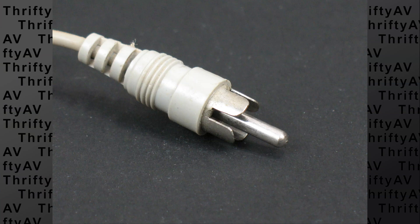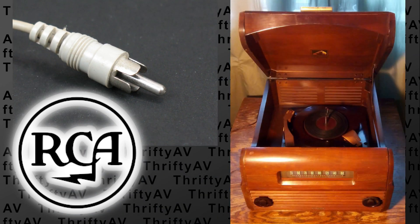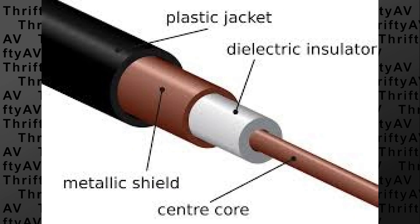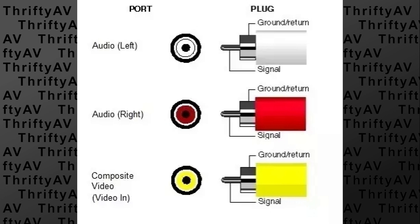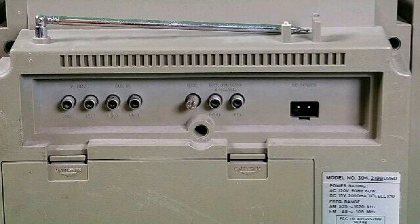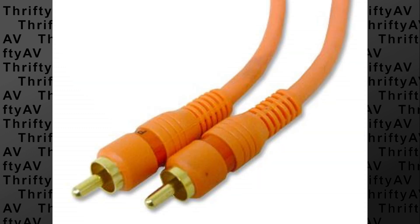RCA connectors were developed in the 1940s by the Radio Corporation of America — RCA — to hook up phonograph turntables to amplifiers. They were also called phono connectors at the time. RCA connectors were designed to be used with coaxial cable, with the signal wire running through the core — also called positive or hot. The core wire has insulation and is surrounded by a ground sheath that wraps around the signal wire. Over time these connectors started being used for other things such as DC power, RF connection like on the Atari, loudspeaker connection, composite video, component video, and S/PDIF digital audio.